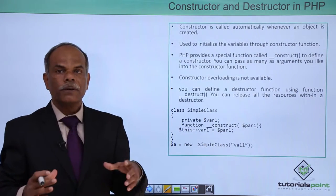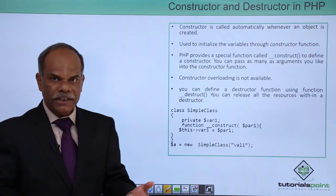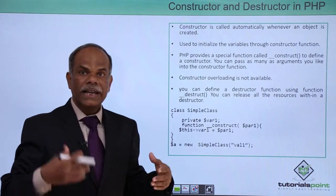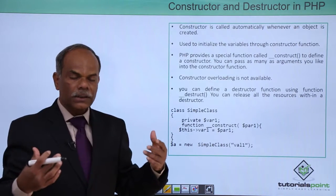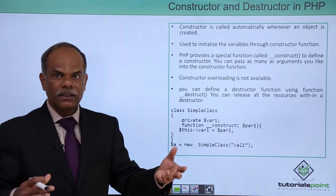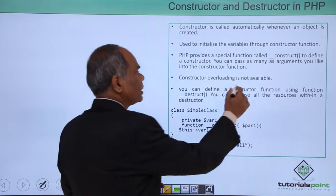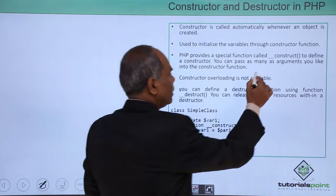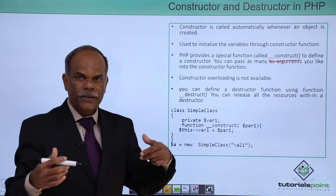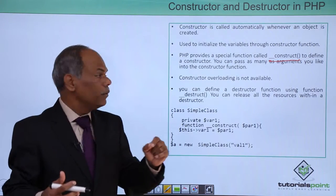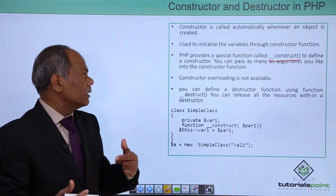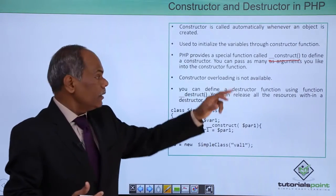We now come to the very important feature of constructor and destructor. Whenever an object is created, it will have all the member variables defined in the class. In order to initialize the object automatically, it is necessary to have a special function in the class which will automatically initialize the data members. That special function is named double-underscore construct (__construct). This function will be automatically called whenever an object is declared — every object creation will call this particular function, inside which you can initialize the member variables pertaining to that particular object.